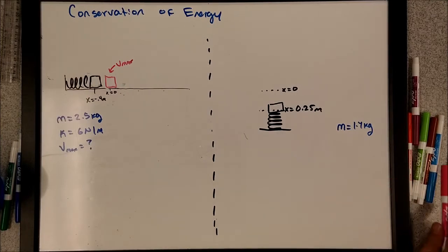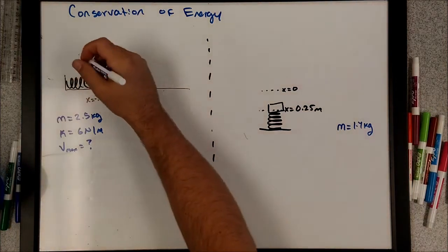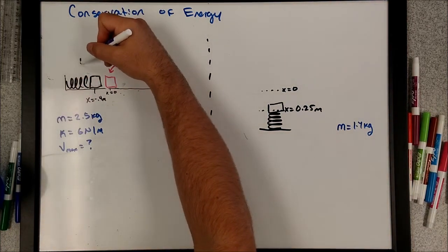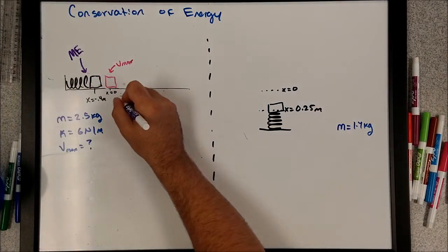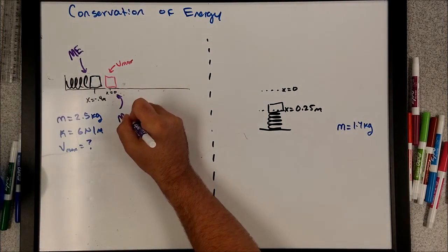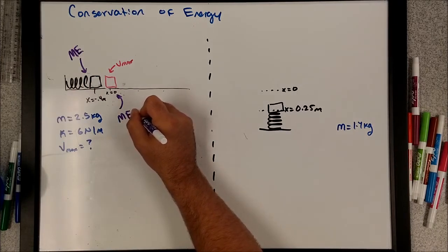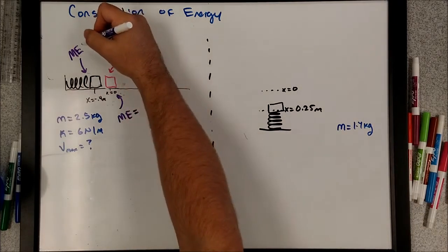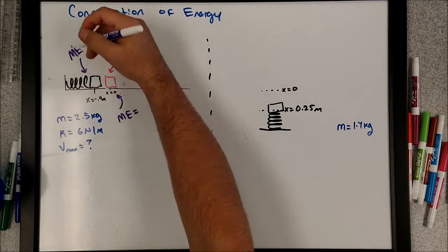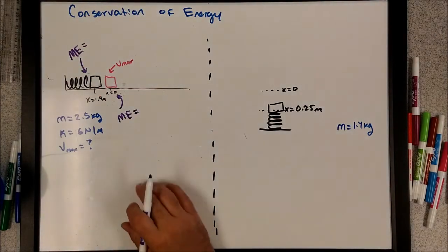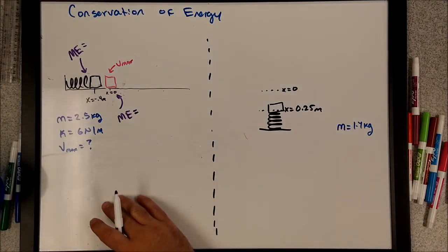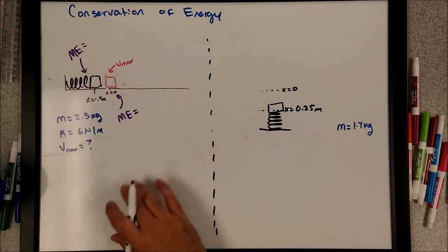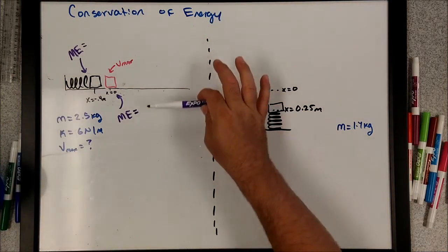What we need to worry about is that velocity at v_max. To find it, we address all of our energy types at the beginning and at the end. Since there is no friction, we can say that the total mechanical energy at the start equals the total mechanical energy at the end. Now we identify what kinds of energy we have: we're dealing with stored elastic potential energy and kinetic energy. We're not worrying about gravitational potential energy because the object is not changing in height.